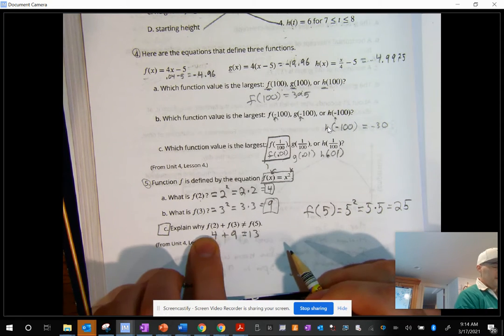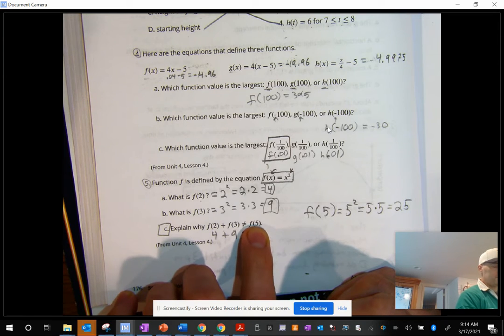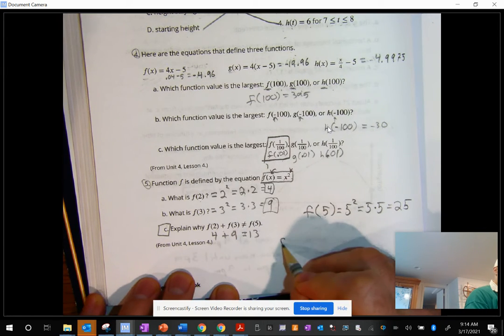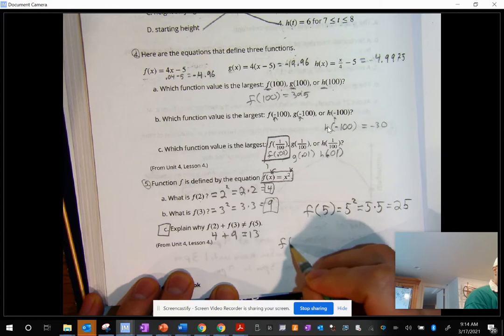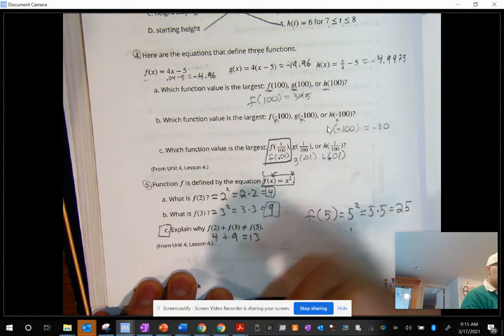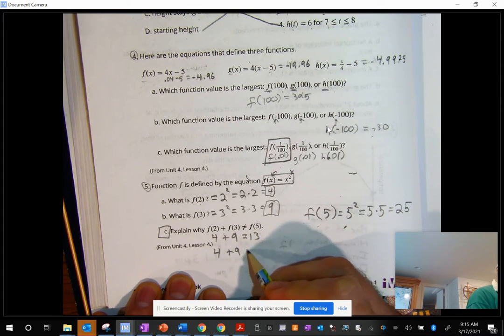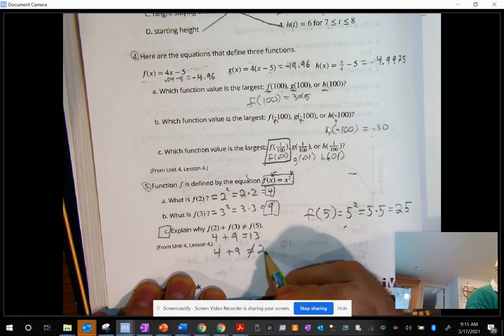So F of 2 plus F of 3, that equals 13. F of 5 equals 25. So I could say F of 2 plus F of 3 does not equal 25. Or in other words, 4 plus 9 does not equal 25.